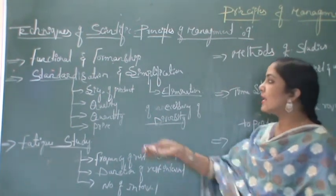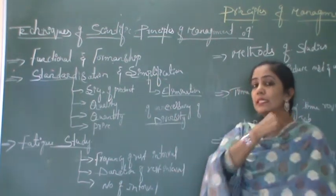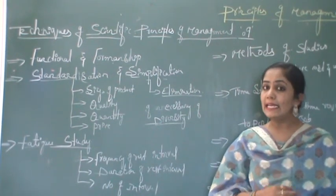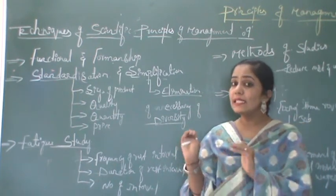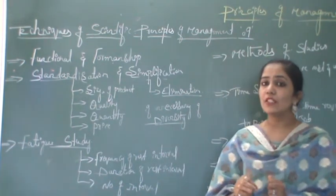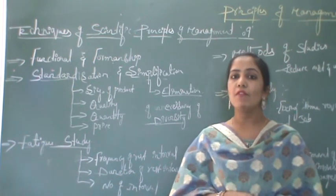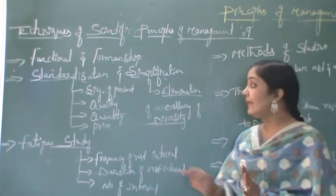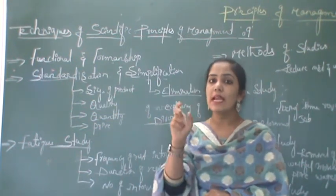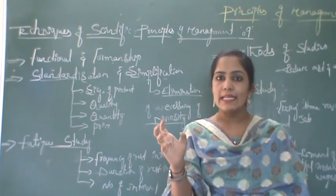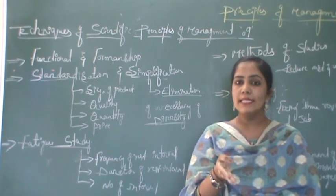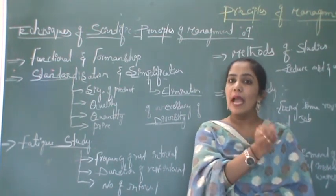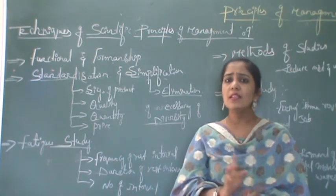The next technique is standardization and simplification. This is the second technique provided by Taylor. In this technique, Taylor says that the organization should maintain standards — specifically in terms of the size of the product. The company should follow the same size of the product. Whatever size and design is adopted by the organization for a particular year, they must produce all units based on that same size and shape.